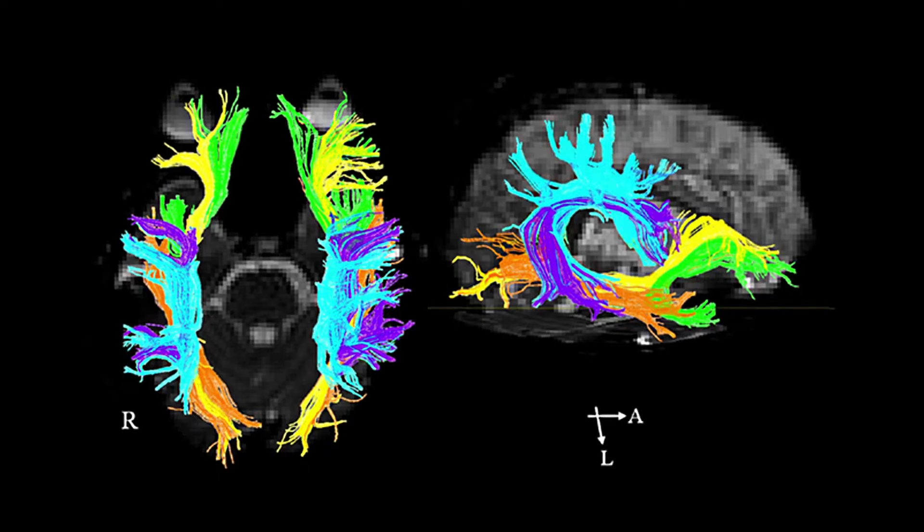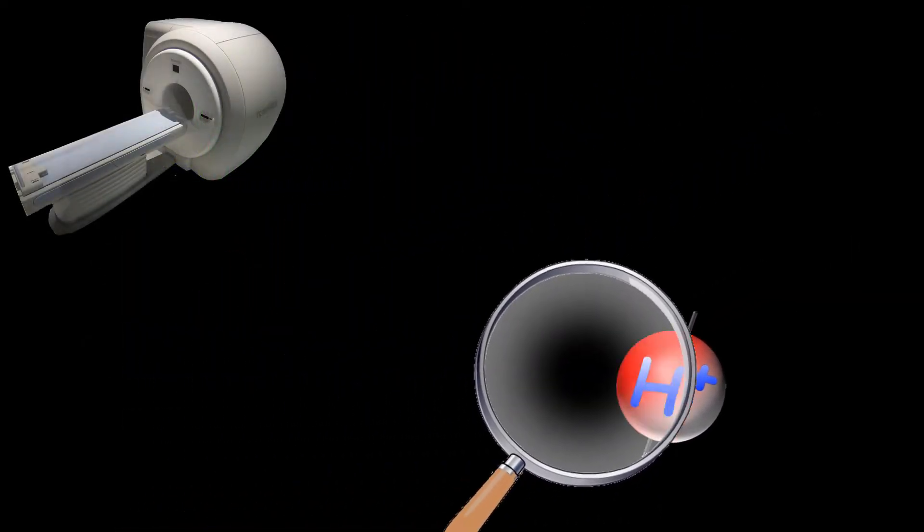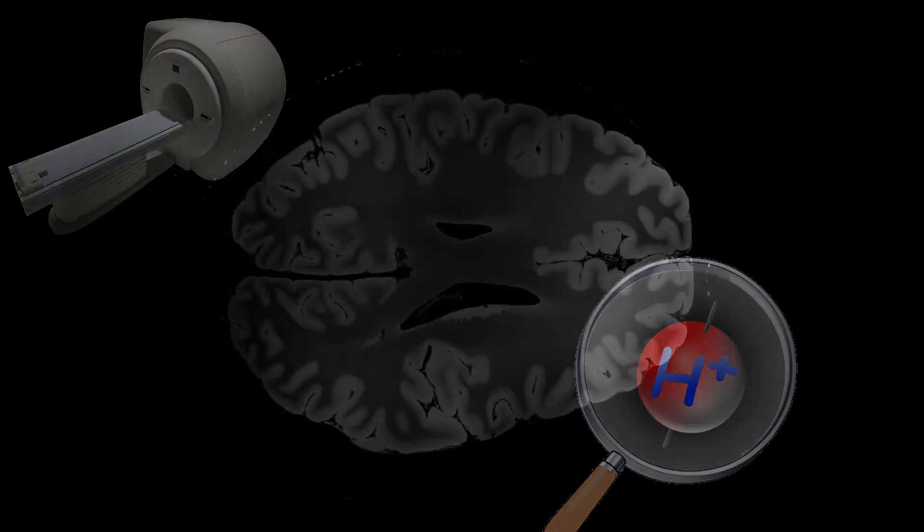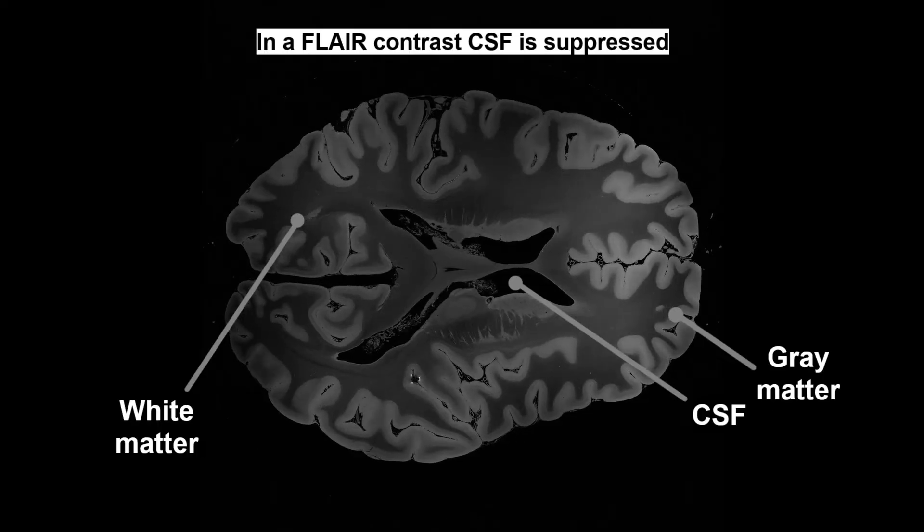As we already have seen in our introductory video on MRI, an MRI scanner is great at picking up hydrogen atoms. So in a structural MRI scan, tissues with more or less water content can be distinguished.